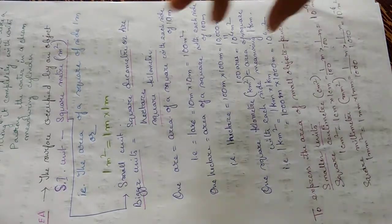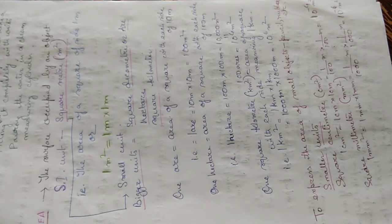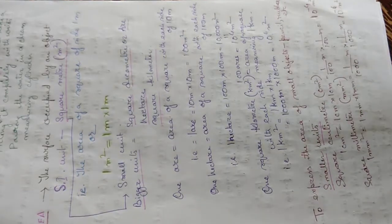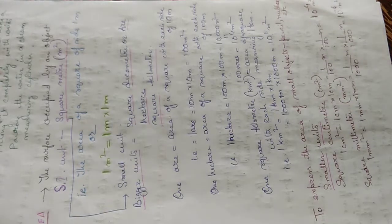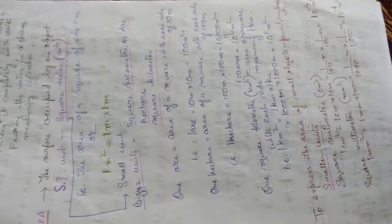To express the area of small objects like a pencil or rubber, smaller units are used. For example, 1 cm² = 1 cm × 1 cm = (1/100 m)² = 10⁻⁴ m². And 1 mm² = 1 mm × 1 mm = (1/1000 m)² = 10⁻⁶ m².